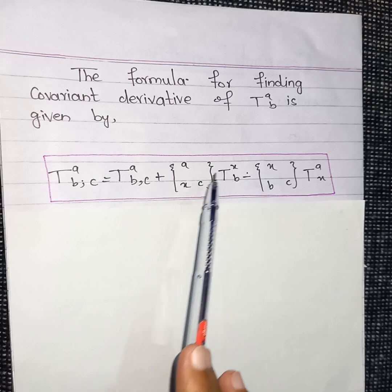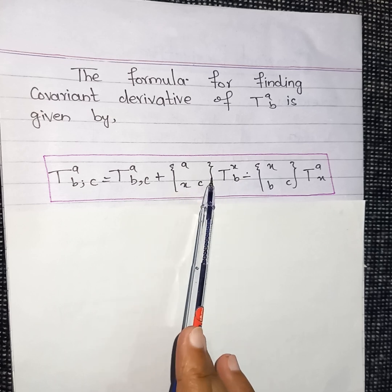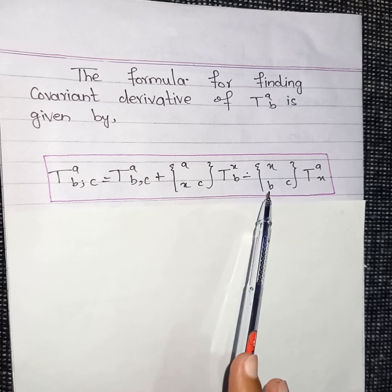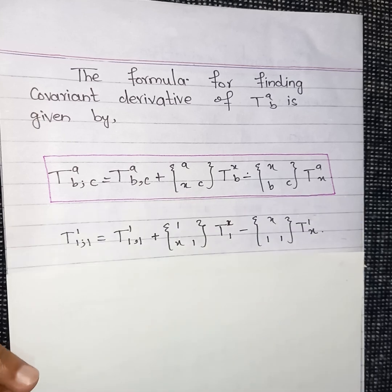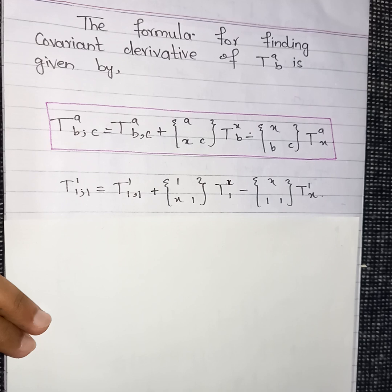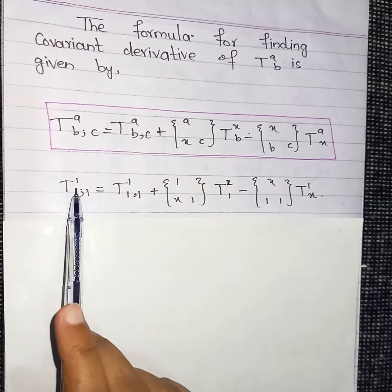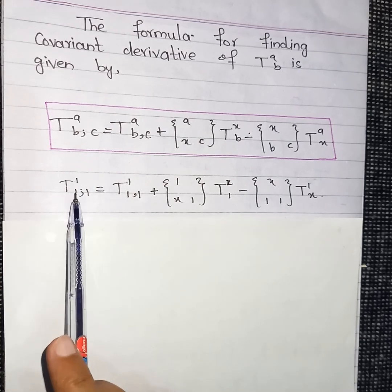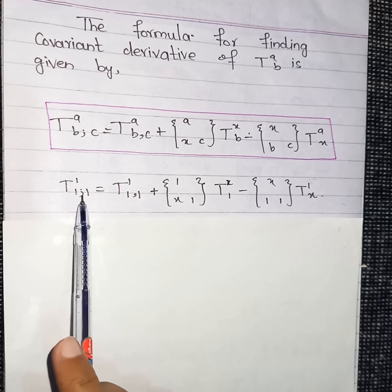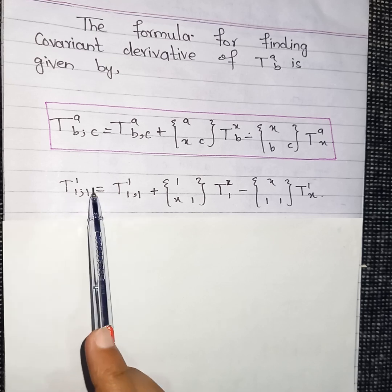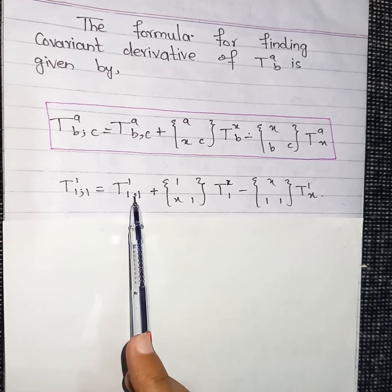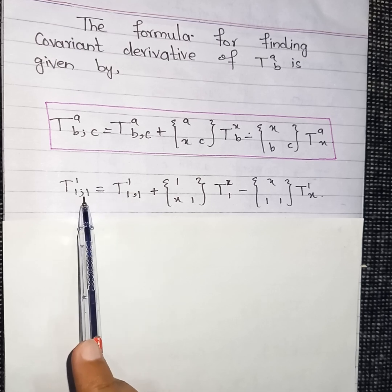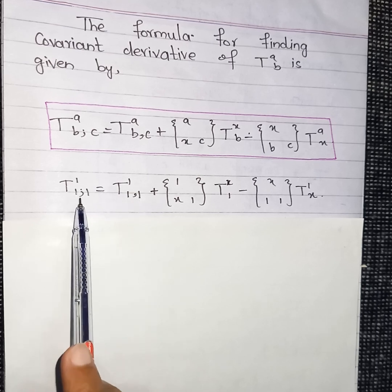The formula for finding the covariant derivative of t_ab is given here, where x represents a dummy index taking values one, two, and three, and we can write it in summation form. First, we will find the value of t¹₁;₁ — that is, the covariant derivative of t_{11} with respect to x1.